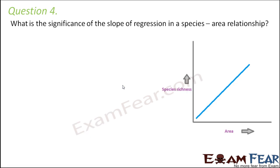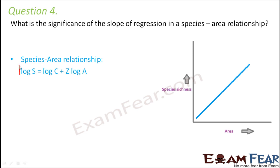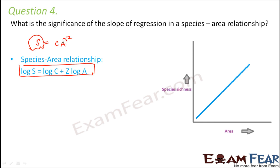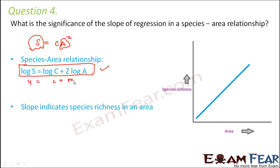Question number four: what is the significance of the slope of regression in a species-area relationship? The species-area relationship is: log S = log C + Z log A, derived from S = C·A^Z. The species richness S is directly proportional to the area A. When you take log on both sides you arrive at that equation. This equation is of the form y = mx + c, where y is log S and x is log A. The slope m in this case is Z — so Z denotes the slope.